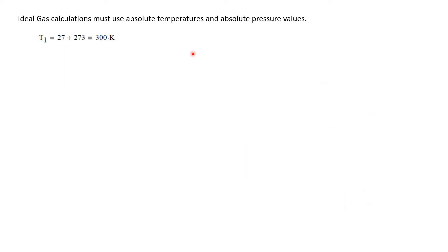As mentioned before, we need to work with absolute temperatures and absolute pressures when dealing with the ideal gas law. T1 was given as 27 degrees centigrade. We need that in degrees Kelvin. We just add 273, so now we have T1 is 300 degrees Kelvin.